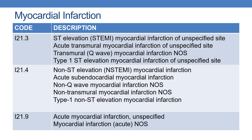The next code is I21.3 — ST elevation myocardial infarction of unspecified site. Synonymous terms include: acute transmural myocardial infarction of unspecified site, transmural myocardial infarction NOS, and Type 1 ST elevation myocardial infarction of unspecified site.